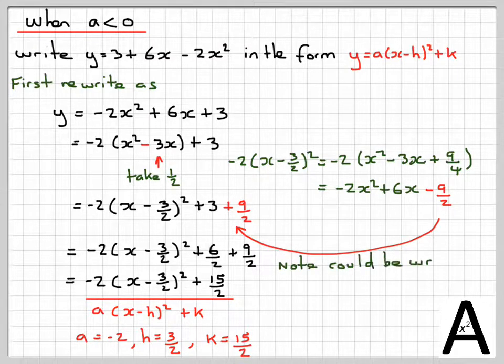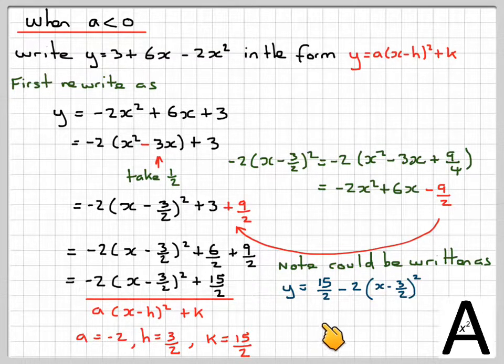Notice sometimes though, this could be written as y equals 15 over 2 minus 2 brackets x minus 3 over 2 all squared. These two have swapped over.